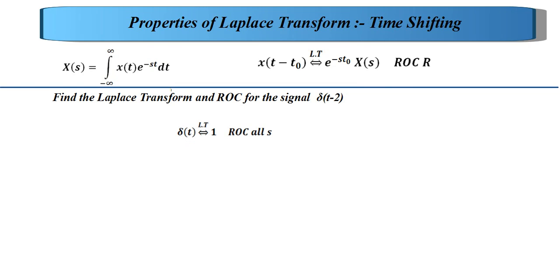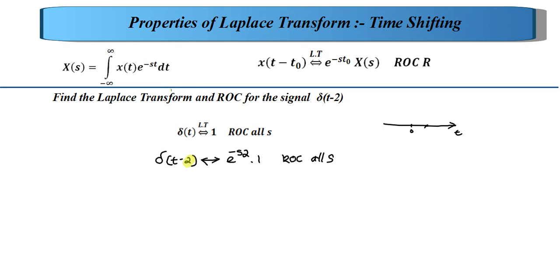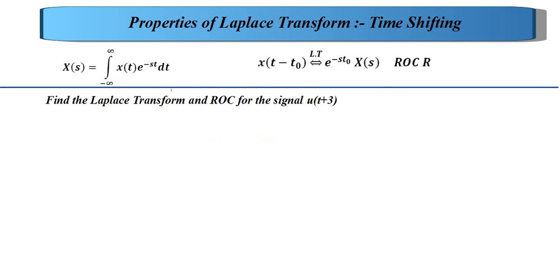The ROC of δ(t) is the entire s-plane. Since δ(t - 2) is a time shifted version of the impulse signal with t0 = 2, applying the time shifting property gives the transform as e^(-2s) times 1, which is e^(-2s). The ROC is the entire s-plane. Note that δ(t - 2) is a signal that exists when t = 2.